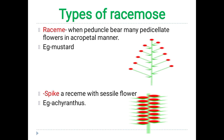The second type of racemose inflorescence is spike. In spike, this is a peduncle and the flowers are present but they do not have a pedicel structure. So it is called a spike, and this is seen in Acanthus.